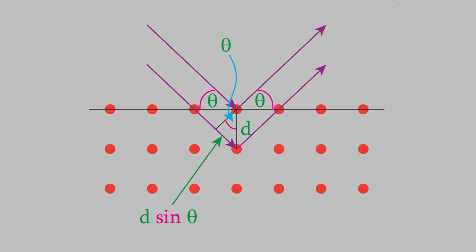That means that this line segment has a length of d sin theta. So, the second X-ray must travel an additional distance d sin theta before it hits an atom. That means during its passage through the crystal, the second photon travels a total additional distance of 2 d sin theta.